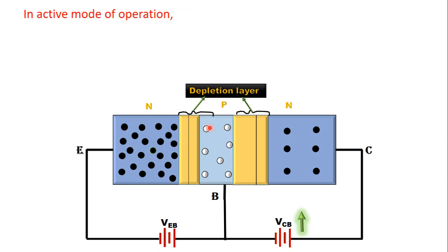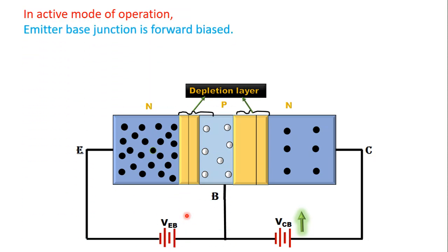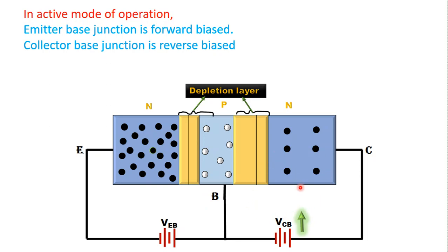We have taken one NPN transistor with its three terminals: emitter, base, and collector. The base spreading resistance is studied when the transistor is operating in active mode. In active mode of operation, the emitter-base junction of the transistor is forward biased and the collector-base junction is reverse biased.